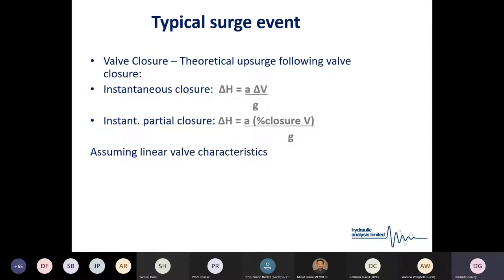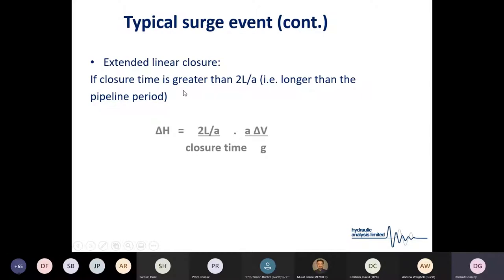During a typical surge event, if you want a rule of thumb to estimate the pressure change from bringing a certain velocity to rest, you might use the instantaneous closure equation. The closure will be less severe for an instantaneous or partial closure when the valve closes over longer than the pipe period. For extended linear closures over longer than two times the pipe period, you can use a modified equation to give yourself a rule-of-thumb calculation.